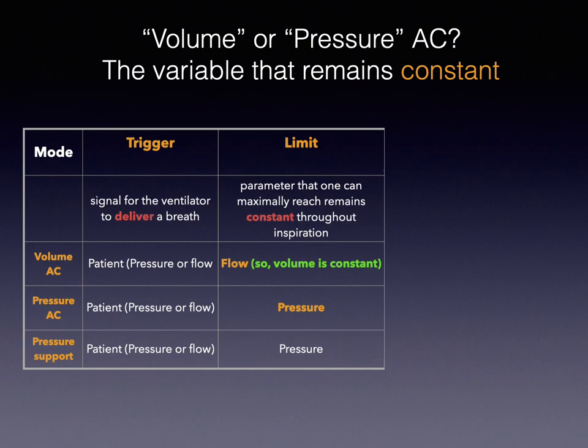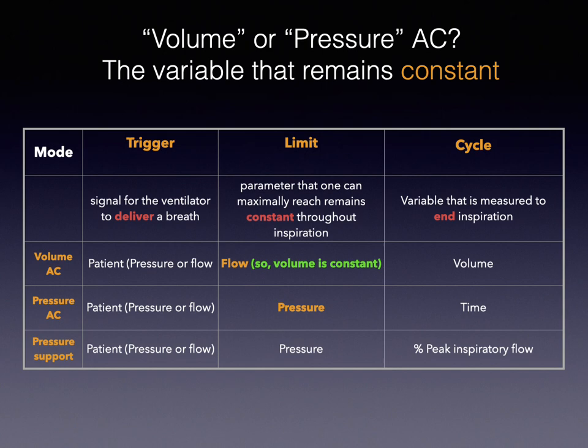The cycle means how the machine knows the patient is finishing or terminating the breath. The cycle in volume assist control is volume, and the cycle in pressure assist control is time. As a beginner learning mechanical ventilation, the key to understand volume assist control versus pressure assist control is which variable remains constant during the inspiratory cycle.